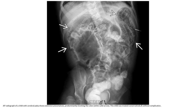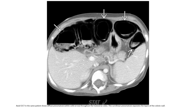AP radiograph of a child with cerebral palsy shows extensive pneumatosis predominantly involving the colon. This child was treated conservatively and without complications. Contrast-enhanced CT in the same patient shows diffuse pneumatosis throughout the transverse colon, with curvilinear pneumatosis separating the layers of the colonic wall.